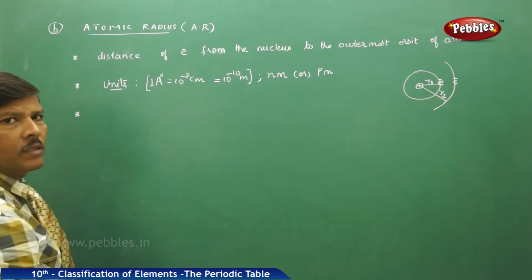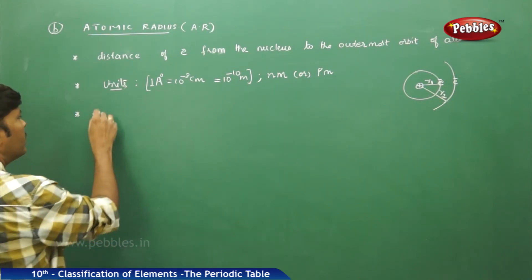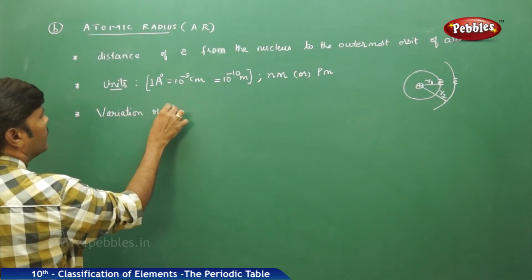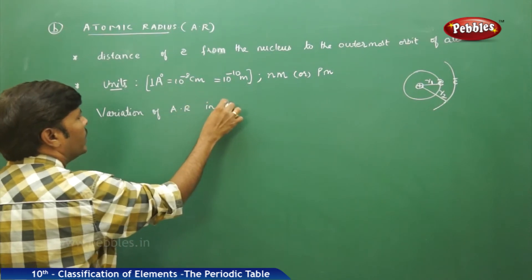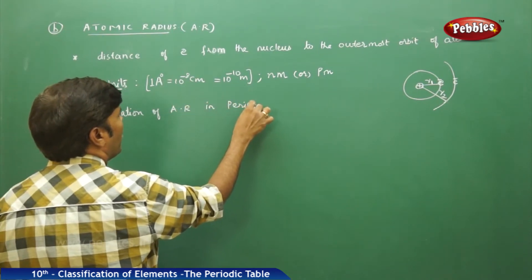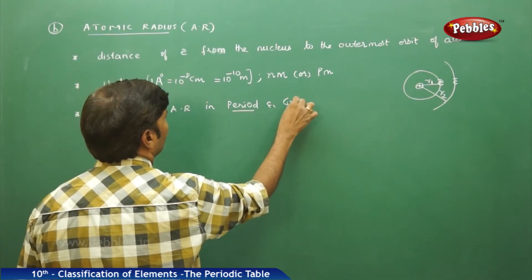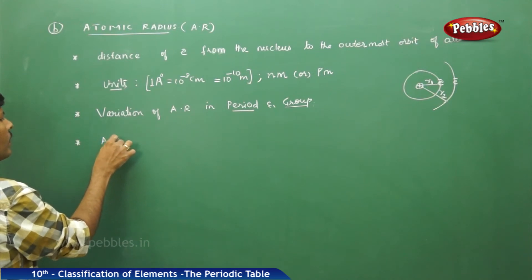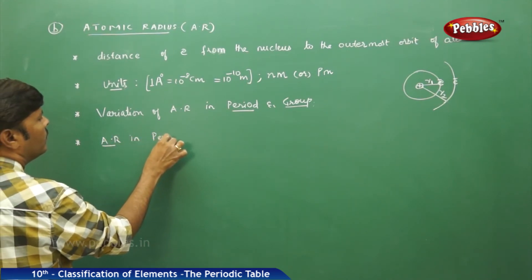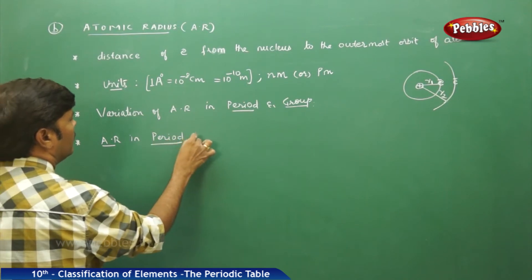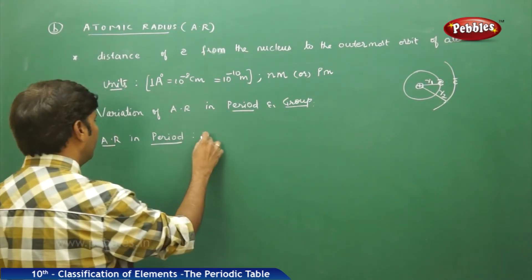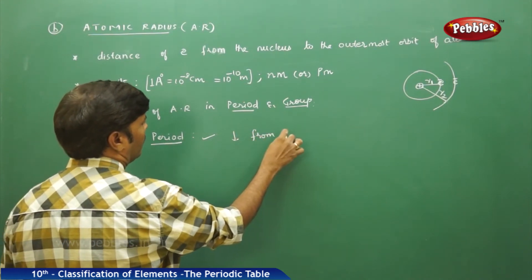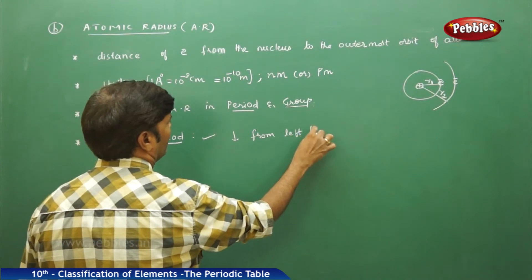Now, if you go for the variation of atomic radius in a period and group — if you go for atomic radius in a period, atomic radius decreases from left to right.